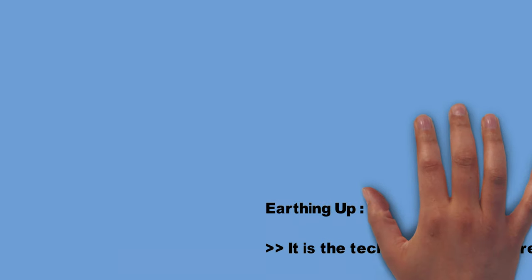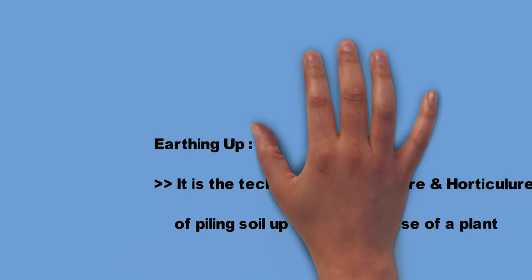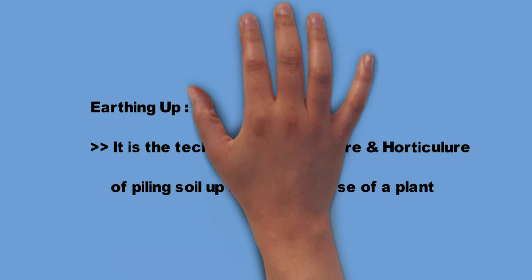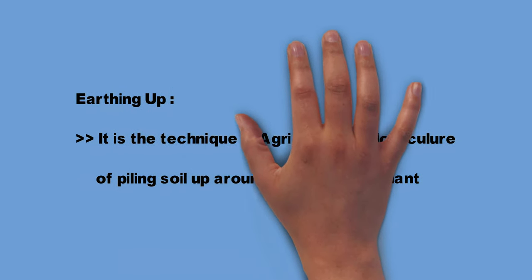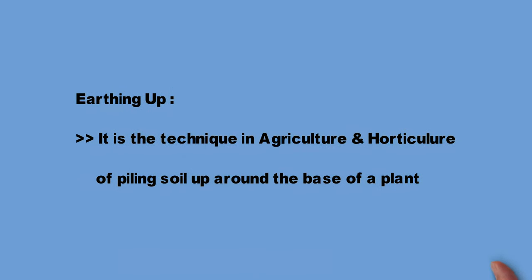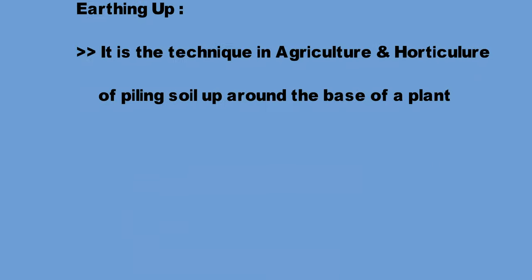Earthing up, also known as ridging, is a technique in agriculture and horticulture of piling soil up around the base of a plant. It can be done by hand using a hand hoe or by powered machineries like tractor attachments.